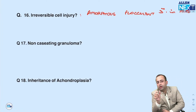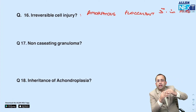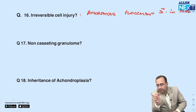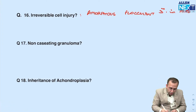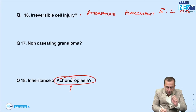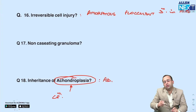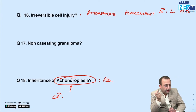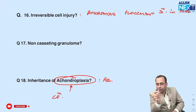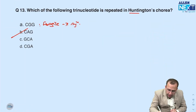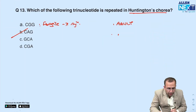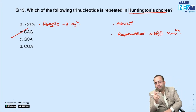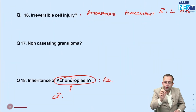For Huntington's disease, the name was not given — the examiner gave you the clinical history. An adult presenting with recurrent abnormal movements. Similarly for achondroplasia — they gave you short stature with a humped back and asked the inheritance pattern: autosomal dominant. So if the question gives repeated abnormal involuntary movements and asks for the trinucleotide repeat, the answer is CAG.